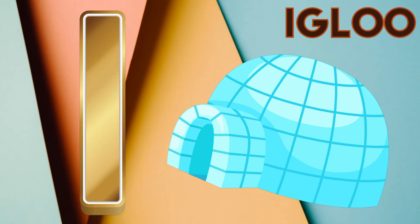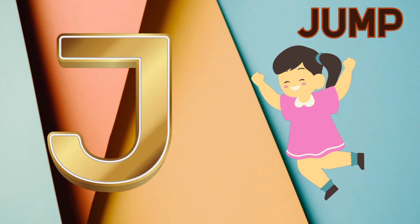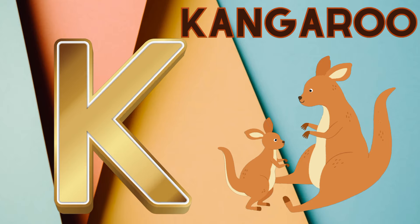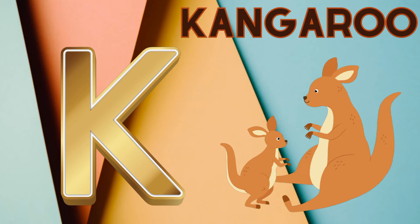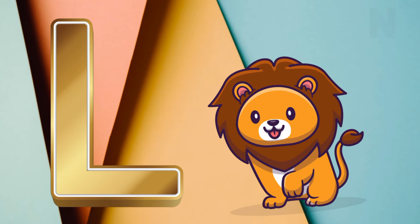I is for igloo, i-i-igloo. J is for jump, j-j-jump. K is for kangaroo, k-k-kangaroo. L is for lion, l-l-lion.